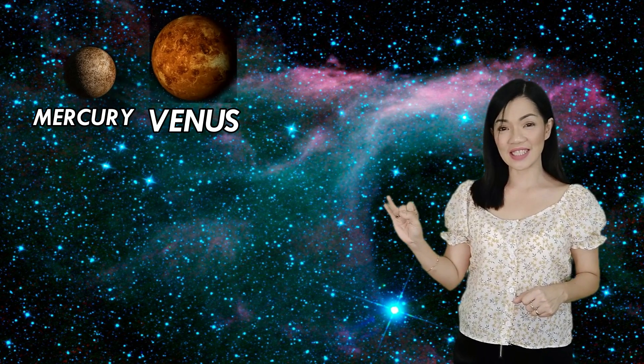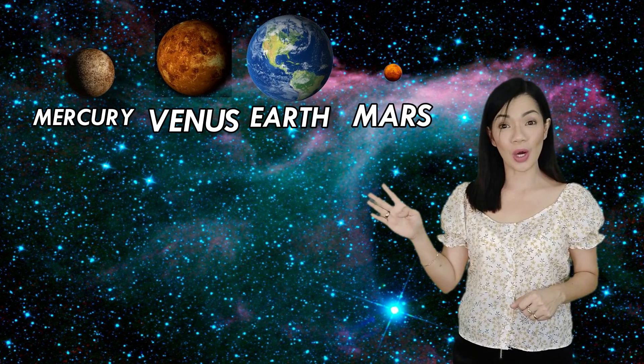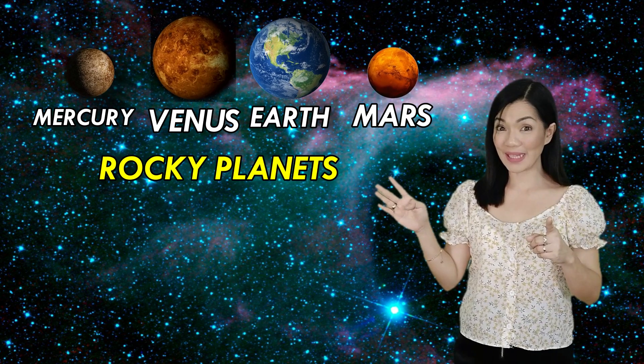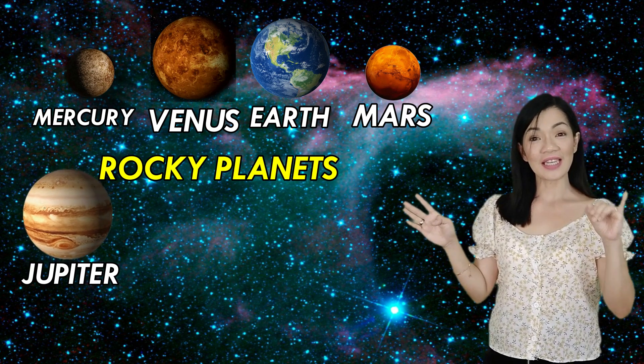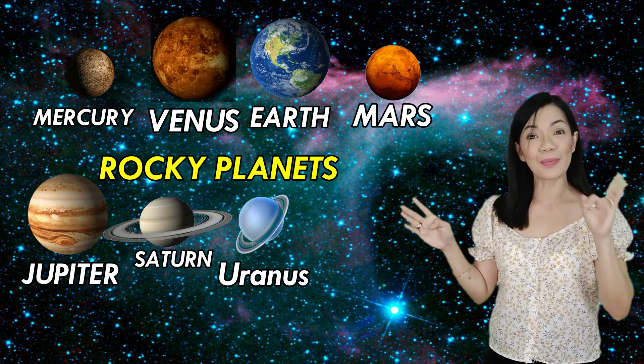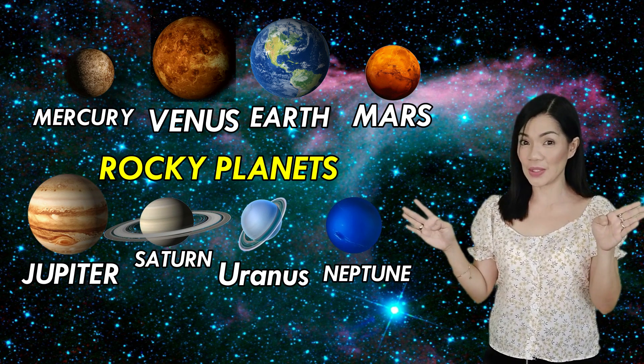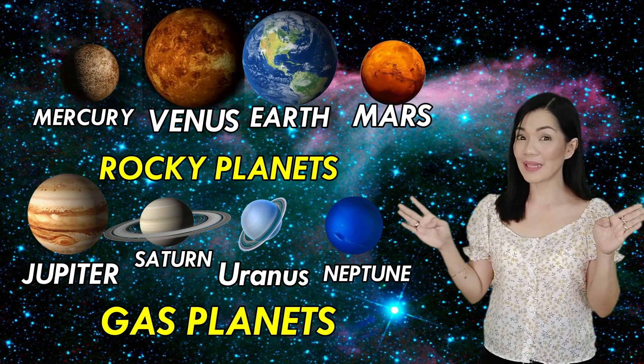So, we learned that Mercury, Venus, Earth, and Mars are rocky planets. And Jupiter, Saturn, Uranus, and Neptune are gas planets. Wow! Those are the eight planets of the solar system.